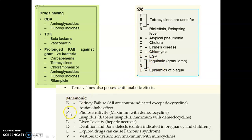Tetracycline anti-anabolic effects mnemonic KAPILDE V: K — kidney failure (all tetracyclines contraindicated except doxycycline); A — anti-anabolic effect; P — photosensitivity (maximum with demeclocycline); I — insipidus (diabetes insipidus, maximum with demeclocycline); L — liver toxicity causing hepatic necrosis; D — dentition and bone defect (contraindicated in pregnancy and children below 7 years); E — expired drugs cause Fanconi syndrome; V — vestibular dysfunction (most commonly with minocycline).